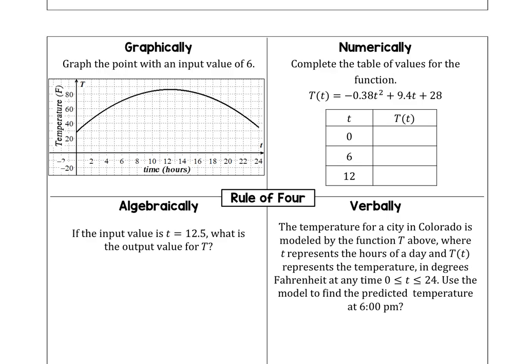Beginning in the numerical column, T of 0 is 28, T of 6 is 70.72, and T of 12 is 86.08.